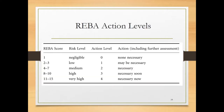The final REBA score is converted into one of five action levels. A score of 1 is Action Level 0 — no action required. As the REBA score increases, the severity of the posture increases. The highest severity corresponds to a score of 11–15, which is Action Level 4.